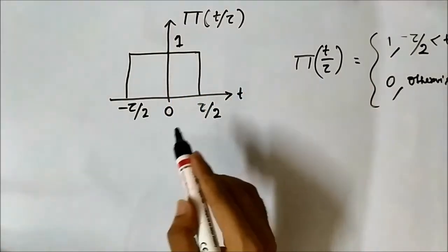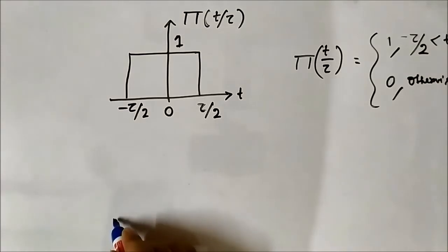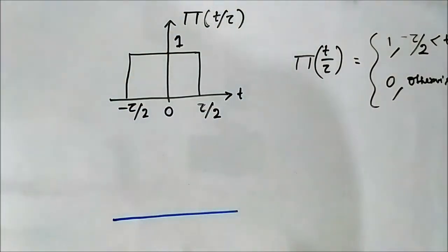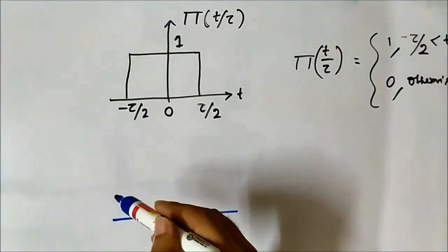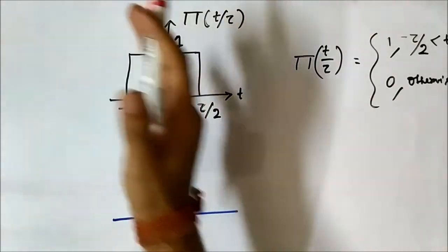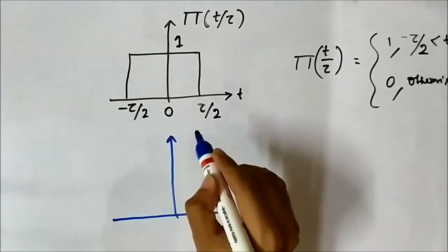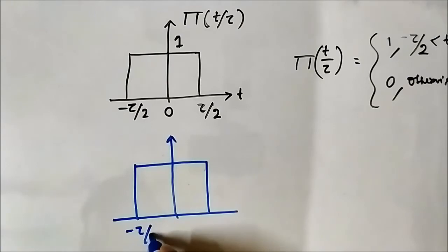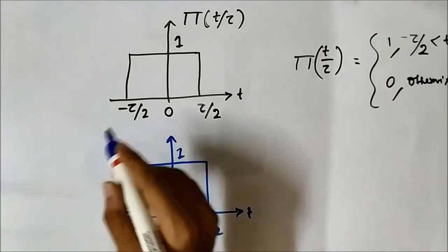Now, if we perform time reversal on this signal, we will get the same signal again. Time reversal simply means folding of the signal — the mirror image of the signal with respect to the vertical axis or the y-axis. But this signal is symmetric around the y-axis; both sides are the same. So even if we perform time reversal, it will result in the same signal — no change.